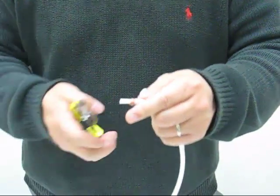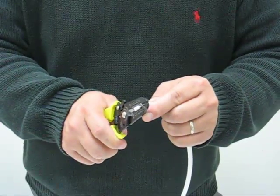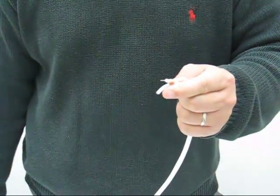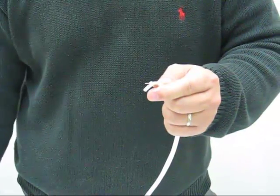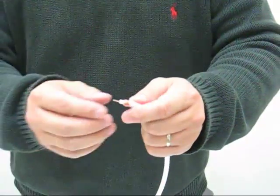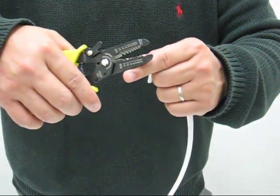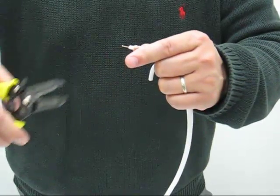Cut the insulation about a quarter inch from the end. Then you will see the center conductor wire. Cut the wire tip diagonally to make a sharp end.